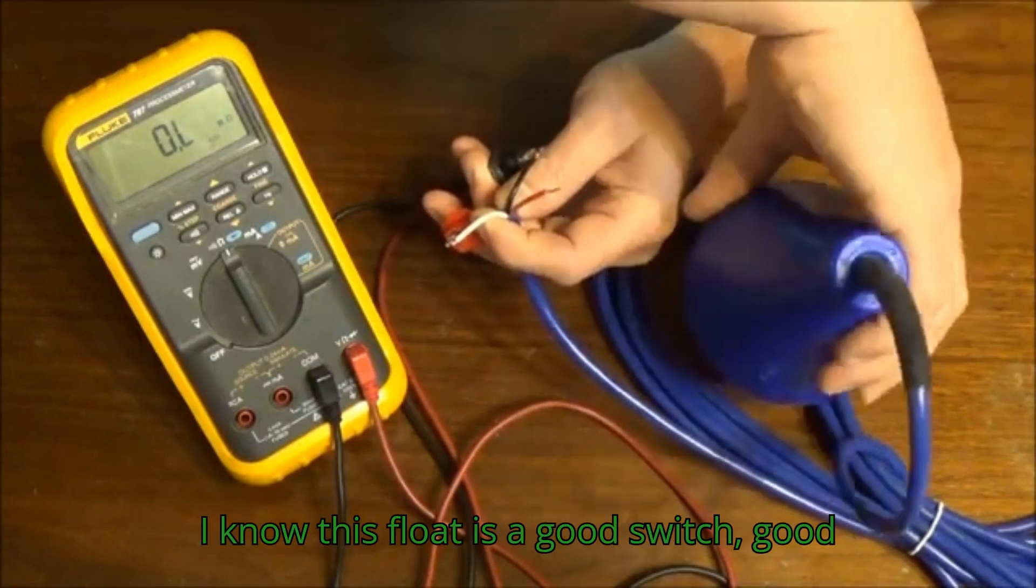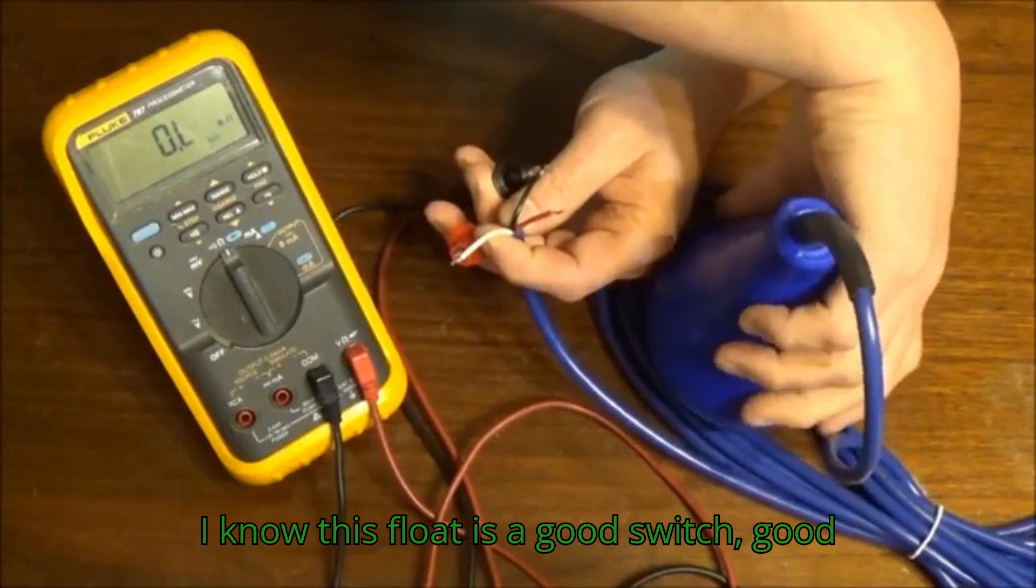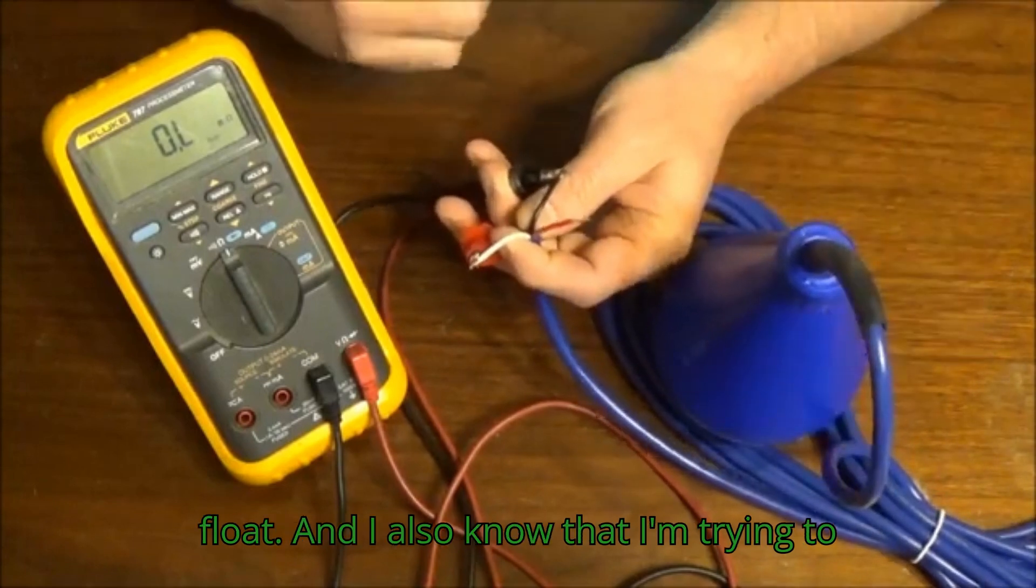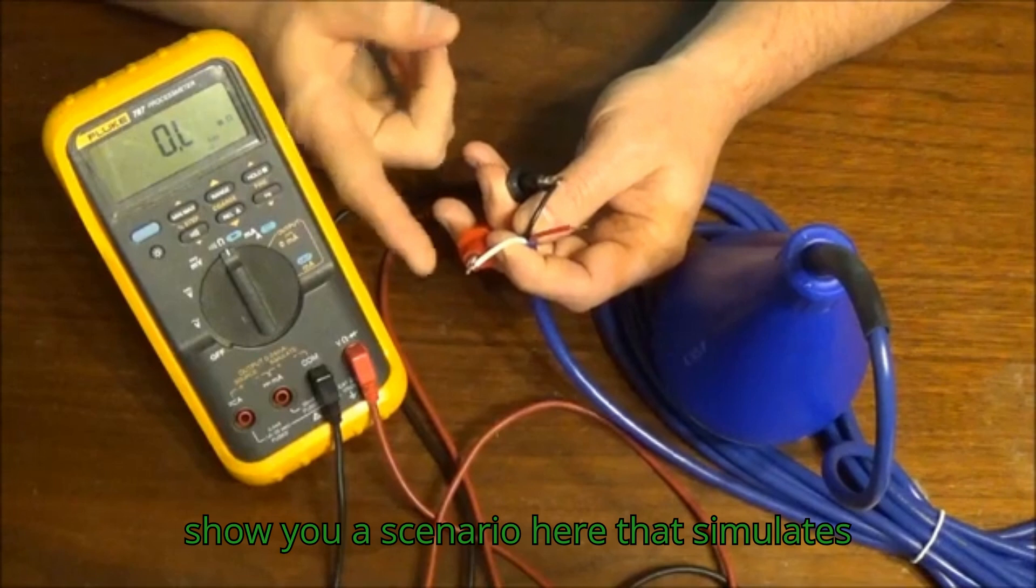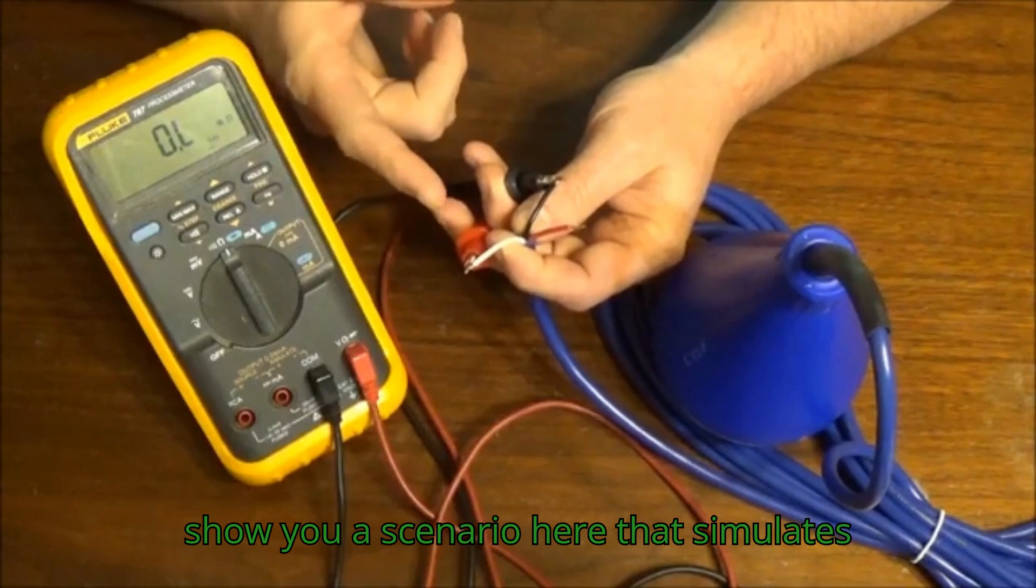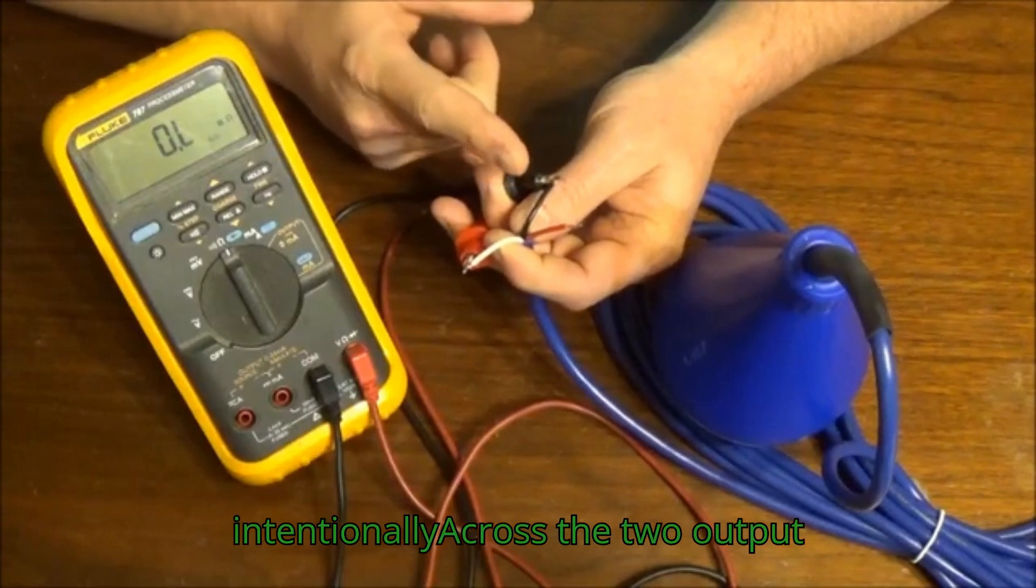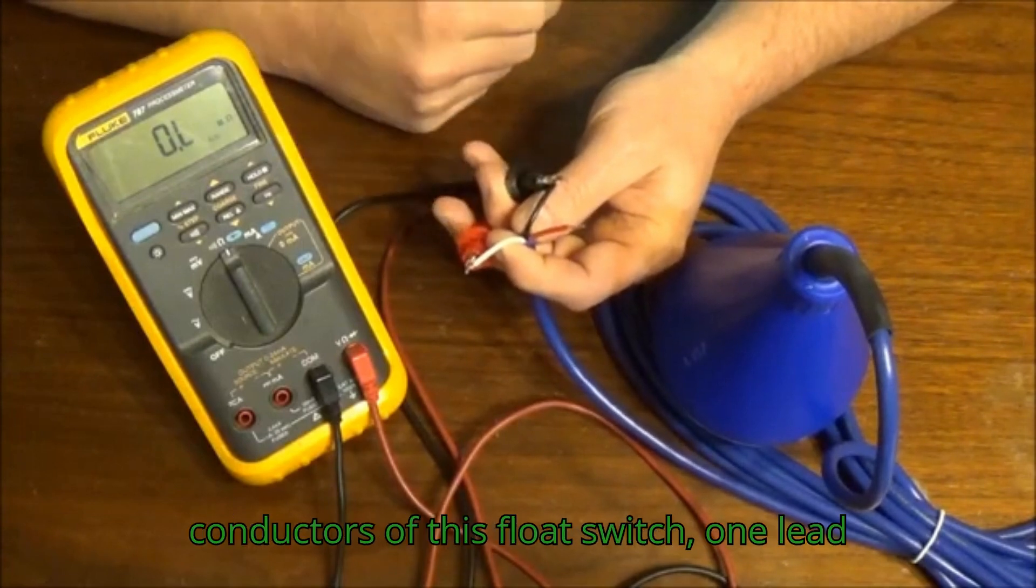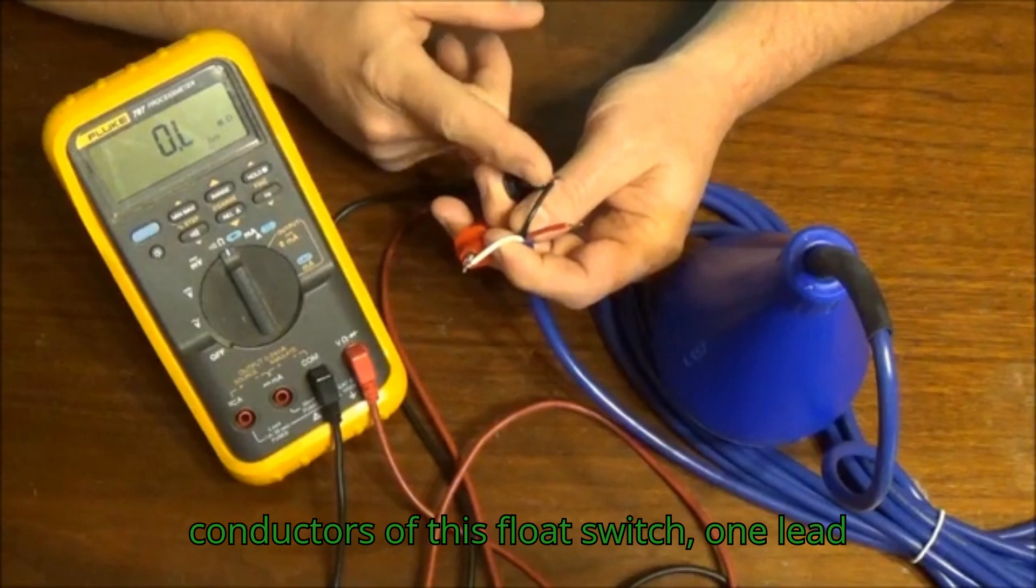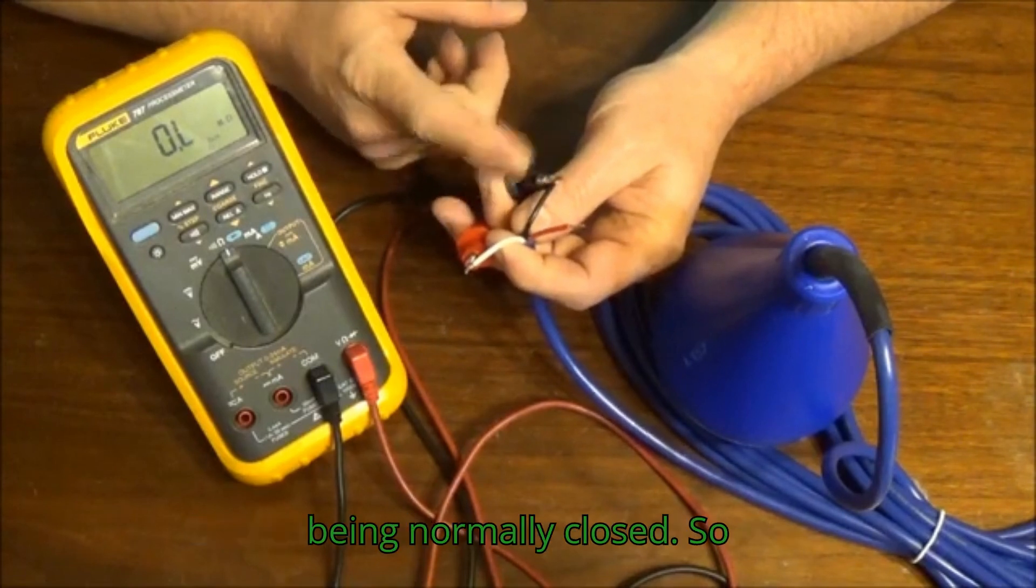But I know this float is a good switch, a good float, and I also know that I'm trying to show you a scenario here that simulates a bad float. I measured intentionally across the two output conductors of this float switch. One lead being normally open and the other lead being normally closed.